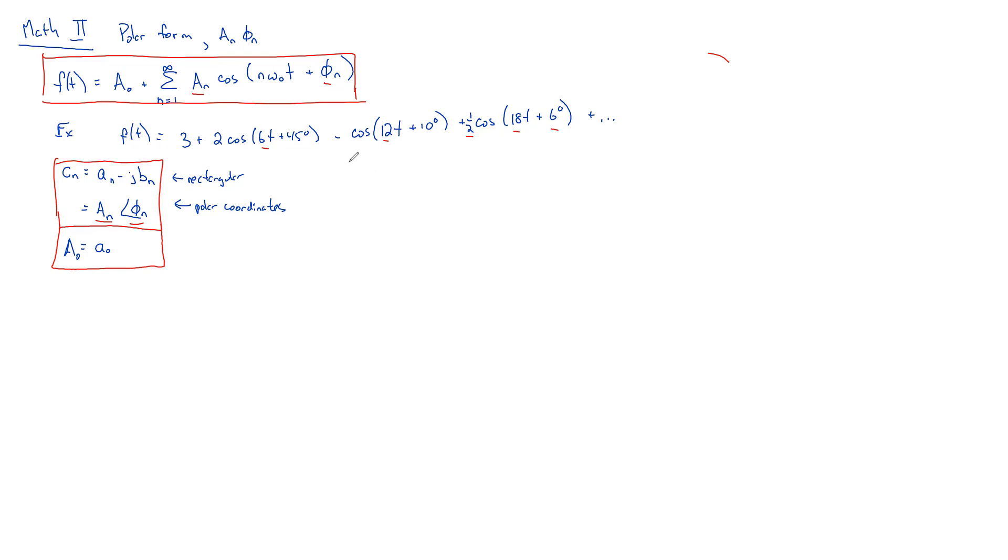So again, just a quick example of this. If your A sub 2 was 4 and your B sub 2 was equal to 3, then your C sub 2 would be equal to 4 minus J3. Remember that there's a minus here. It's not a plus. And then you could equally write that in magnitude angle form like this.